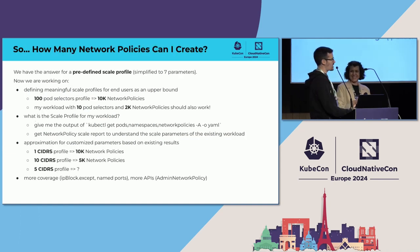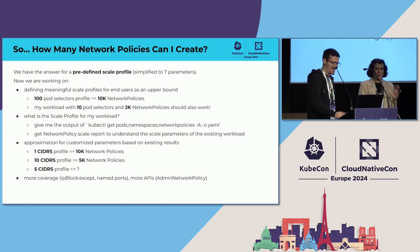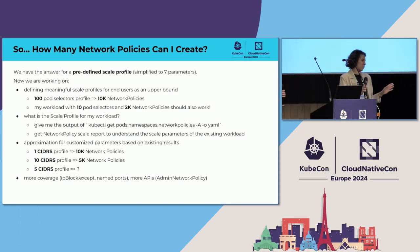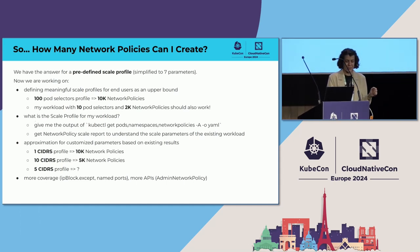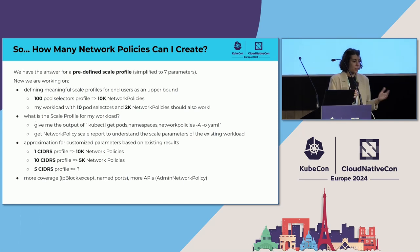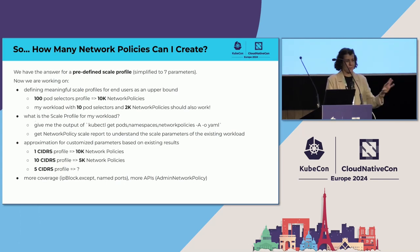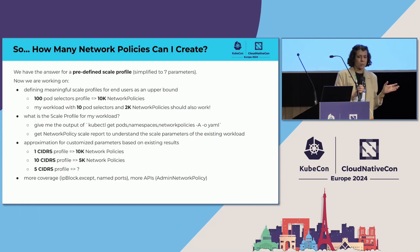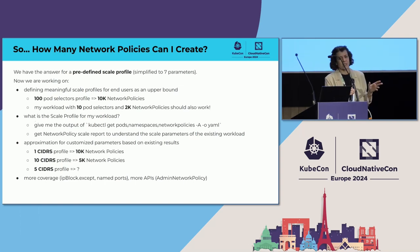So Nadia, how many network policies can I create? Getting back to the original question: we have an answer with a predefined scale profile, which boils down to seven parameters. You could say that people don't usually run thousands of network policies with the exact same scale profile — they probably have a couple of policies with very different profiles at the same time. What we can do is define some meaningful scale profiles to be used as an upper bound. If I know the 100-pod-selector profile allows 10,000 network policies, and my network policies use just 10 pod selectors and only need 2,000, then it probably will work because it's much less than what is already supported.